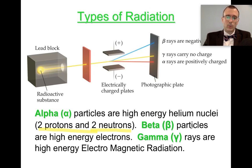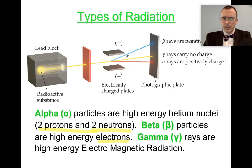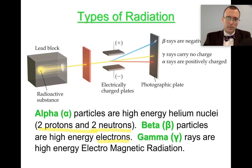Beta particles were later found to simply be electrons — very high-energy electrons. Electrons are negatively charged and are attracted to a positive plate. Notice that beta particles are actually moved more than the alpha particles. The reason for that is simply because electrons are much, much lighter, and lighter particles are able to be moved more than alpha particles, which have more momentum and are affected less.